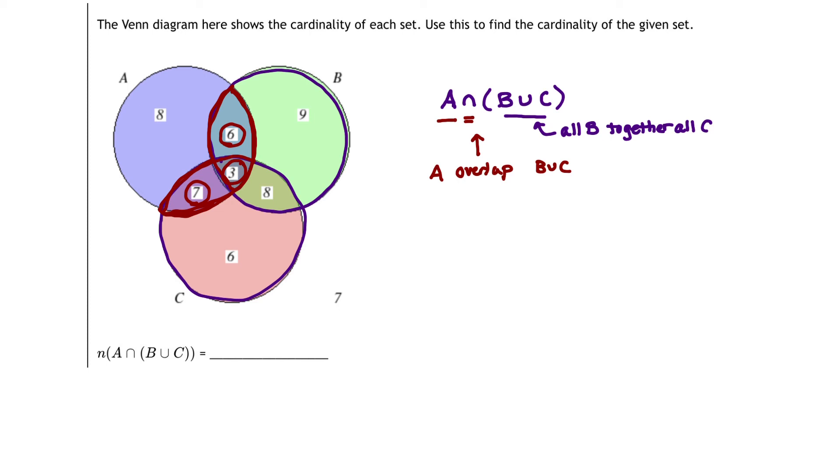So to get the cardinality of the set A intersect B union C, I'm going to write down the cardinality then of A intersect B union C, or the number of elements in A intersect B union C, is simply 7 plus 3 plus 6. And if we add up those numbers, what do we get? We get 10 plus 6, or 16. So the number of elements that fall in A intersect B union C is simply 16.